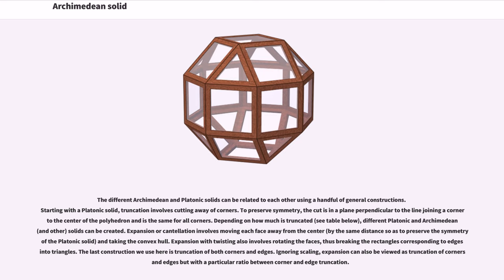The different Archimedean and Platonic solids can be related to each other using a handful of general constructions. Starting with a Platonic solid, truncation involves cutting away of corners. To preserve symmetry, the cut is in a plane perpendicular to the line joining a corner to the center of the polyhedron and is the same for all corners. Depending on how much is truncated, different Platonic and Archimedean and other solids can be created.